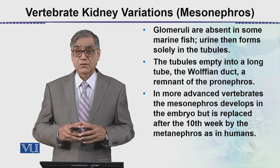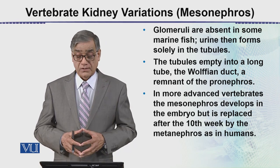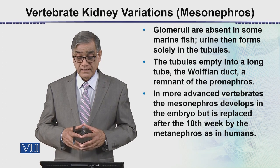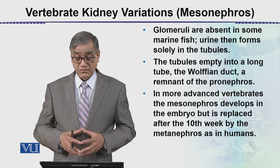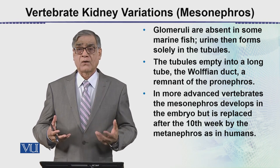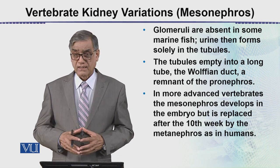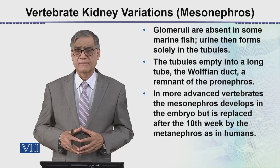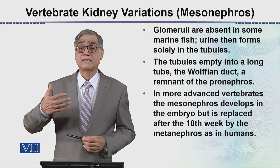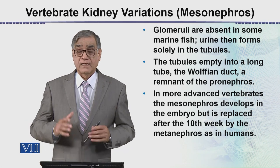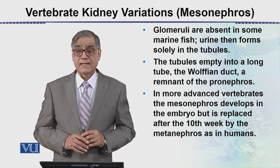The Wolffian duct is a remnant of the pronephric duct. In some advanced vertebrates the mesonephros develops in the embryo but is replaced after the 10th week by the metanephros, as in humans. In humans the pronephros forms very early — particularly around the 10th week — and then it starts shaping into the metanephros, which is the adult kidney. So the mesonephros is the intermediate stage between the pronephros and the metanephros.